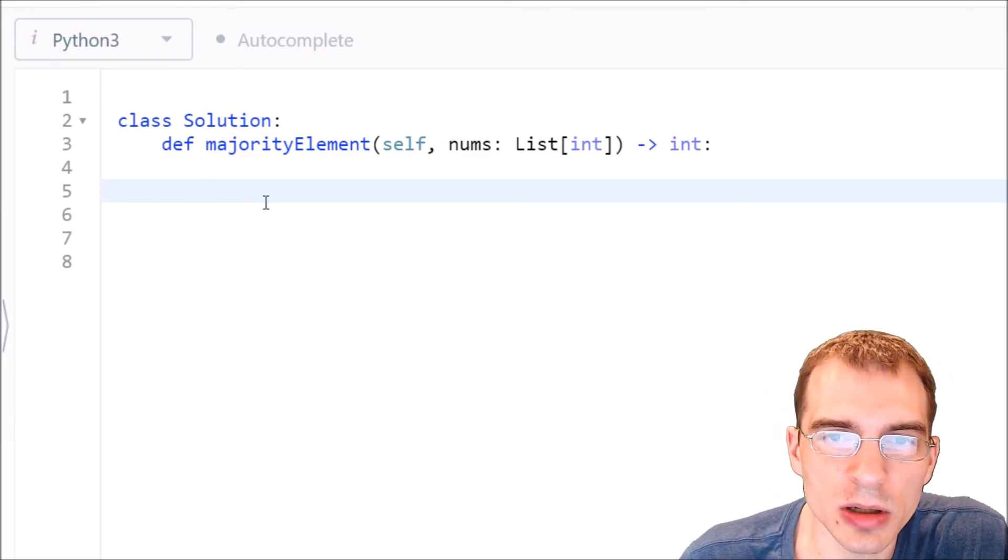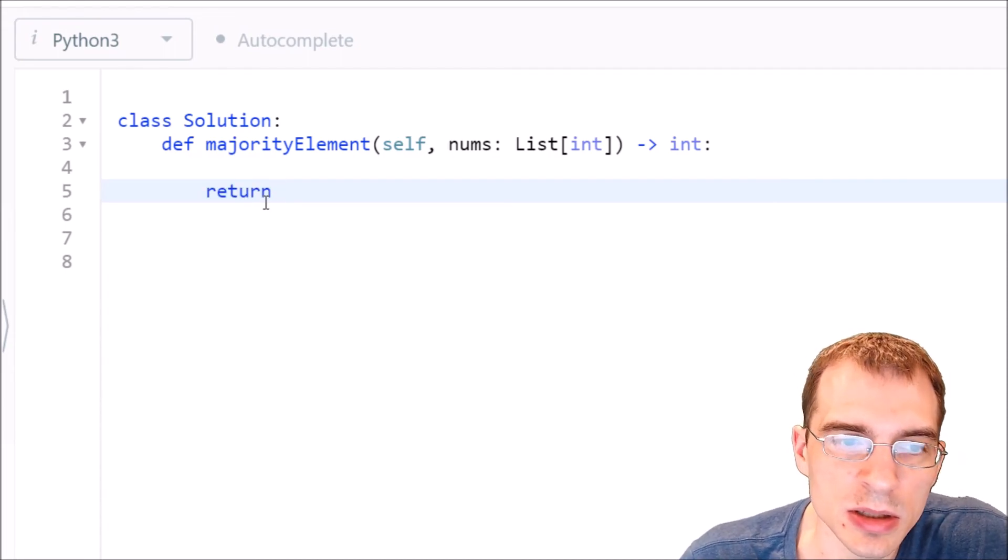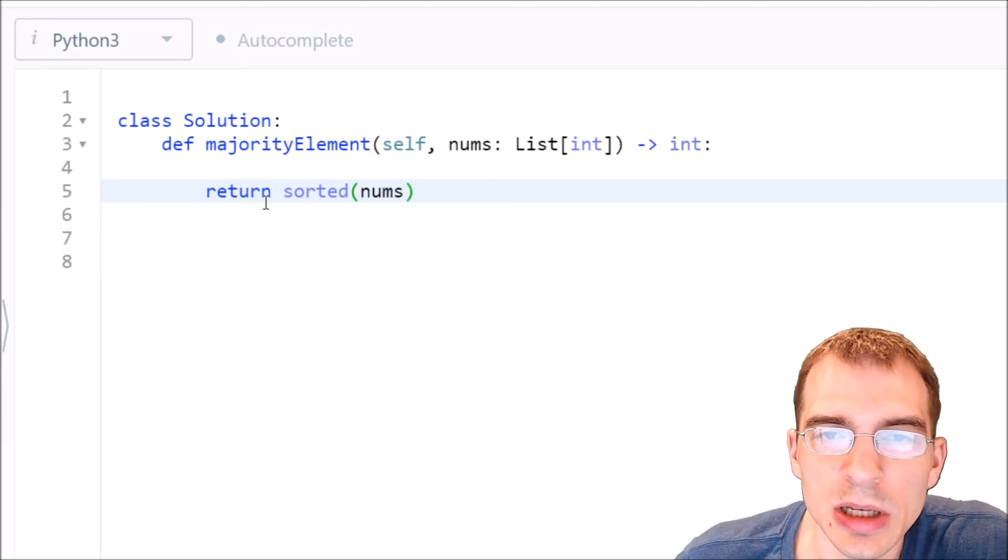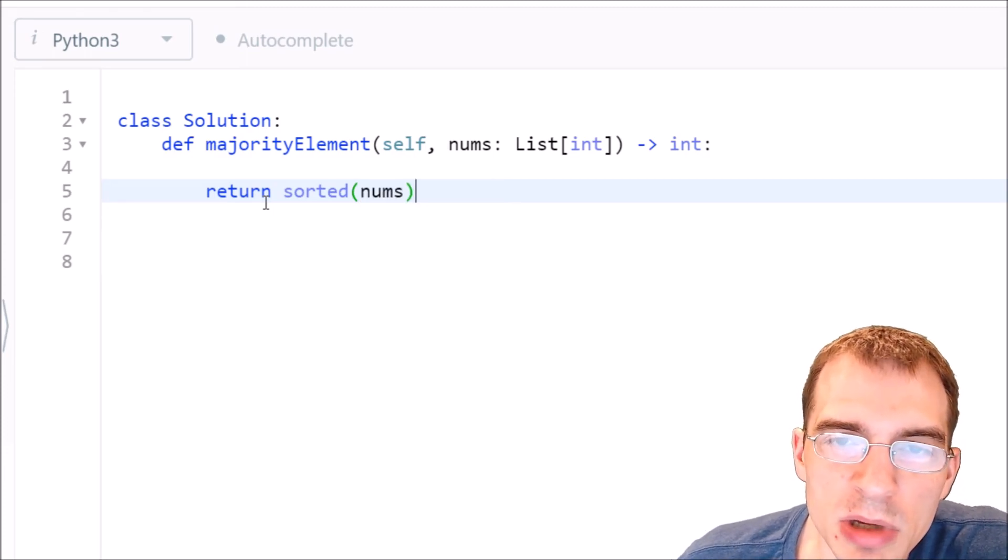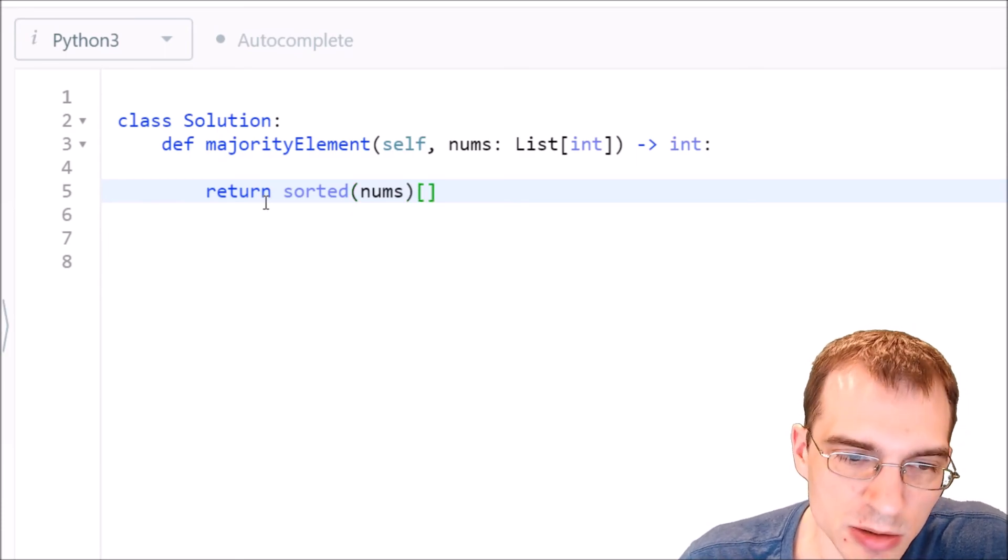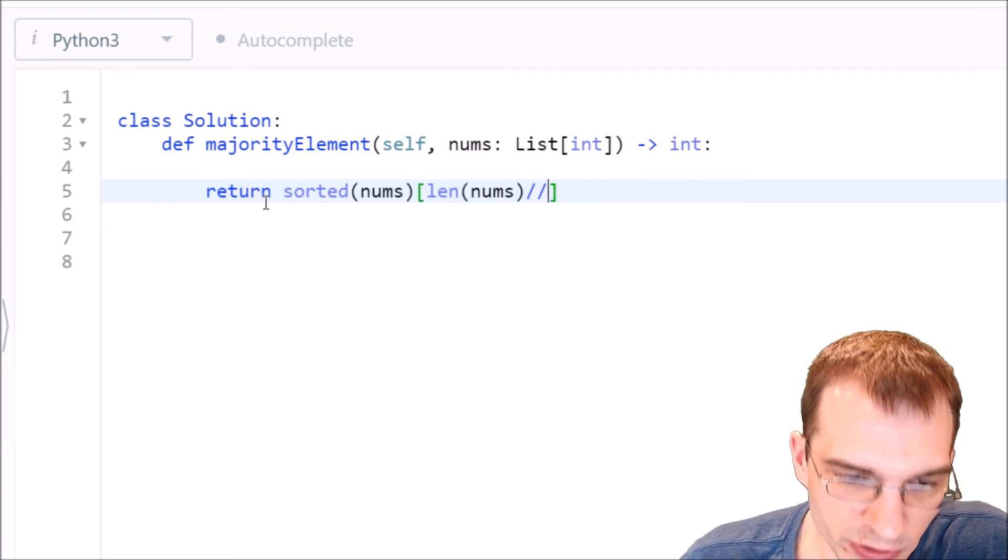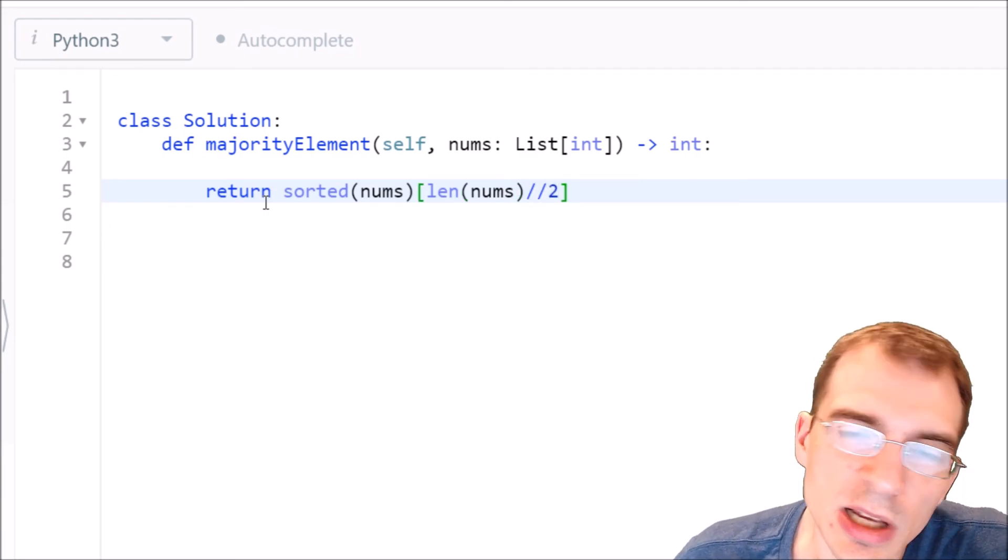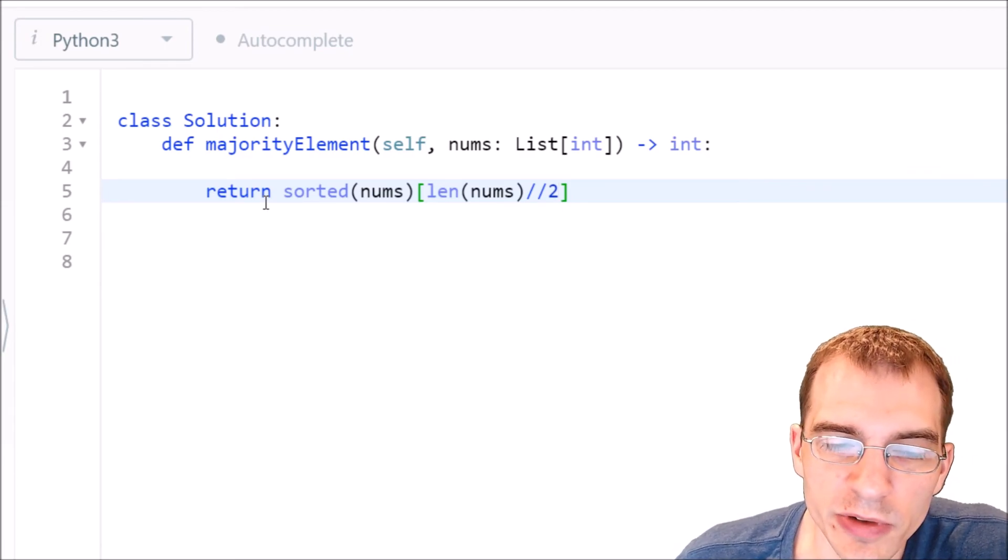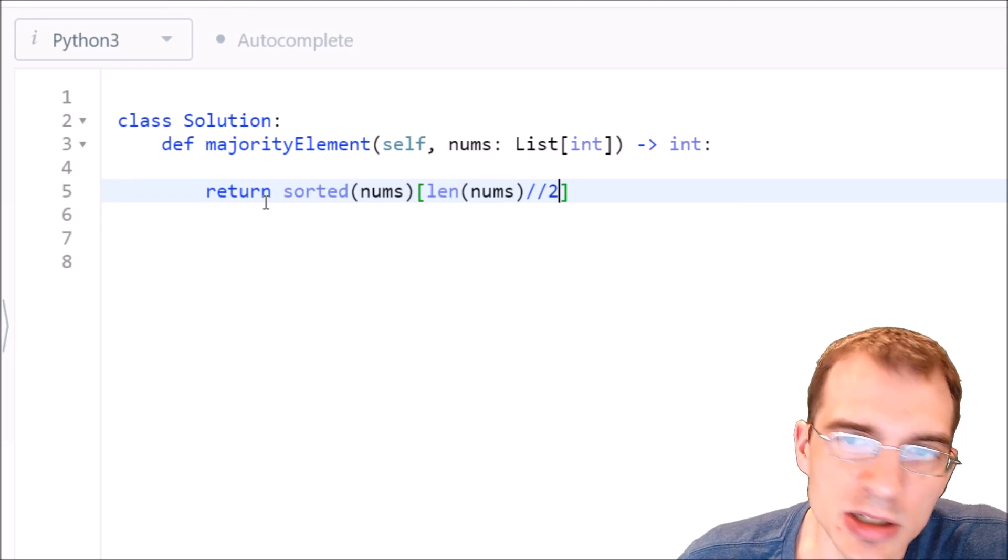Well, what we're trying to do here is return the sorted version of the input, so sorted nums, and we want to get the middle element of sorted nums. So we want to return the element at the length of nums floor divide 2. We do floor divide because if it's odd we will get a floating point number here.